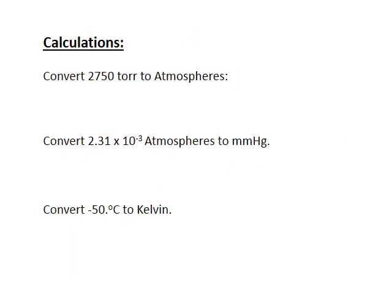We can do these unit conversions simply using factor-label calculations. For example, if I have 2750 torr and want to find how many atmospheres that is, I start with the measured quantity and set up my conversion factor with the units I want to eliminate in the denominator and the units I want to keep in the numerator. According to the calculation, 2750 torr corresponds to 3.62 atmospheres.